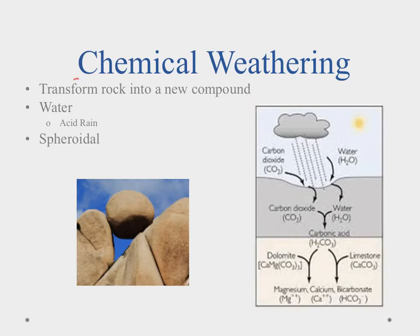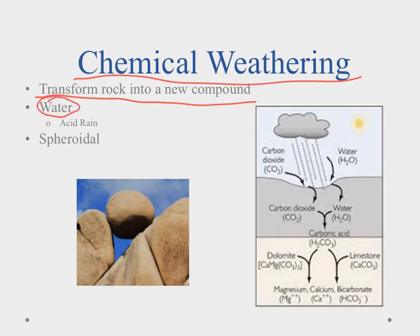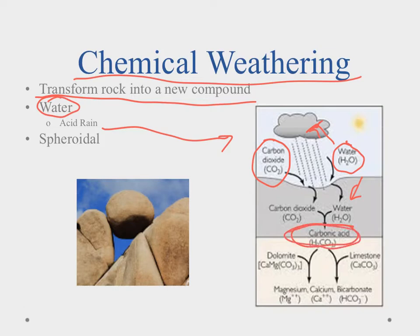Chemical weathering is a little bit different. In chemical weathering, we're transforming the rock into something new — causing a chemical reaction to occur — so we're not simply breaking a rock into smaller pieces, we're actually changing the composition. The most common way for this to happen involves water. Carbon dioxide released into the atmosphere joins with water — either in the clouds or on the ground — to form carbonic acid. That weak acid reacts with dolomite, limestone, and marble, causing them to erode or chemically change and wash away.